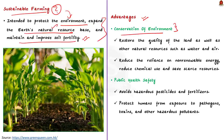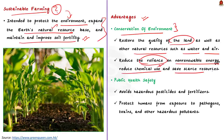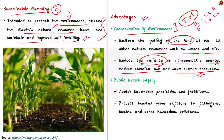By adopting sustainable practices, farmers will reduce their reliance on non-renewable energy, reduce chemical use, and save scarce resources. Population and demand for food will continue to rise in the future. As Thomas Malthus famously stated, population will rise in geometric progression but food production can only increase in arithmetic progression. The replenishment of natural resources ensured by sustainable agriculture will help sustain life for future generations.